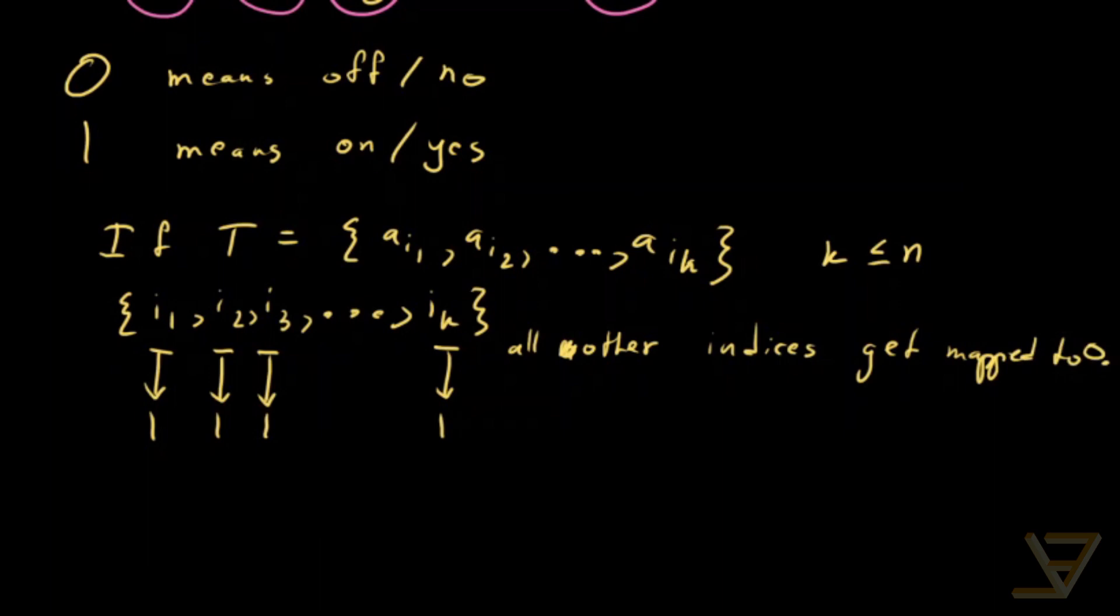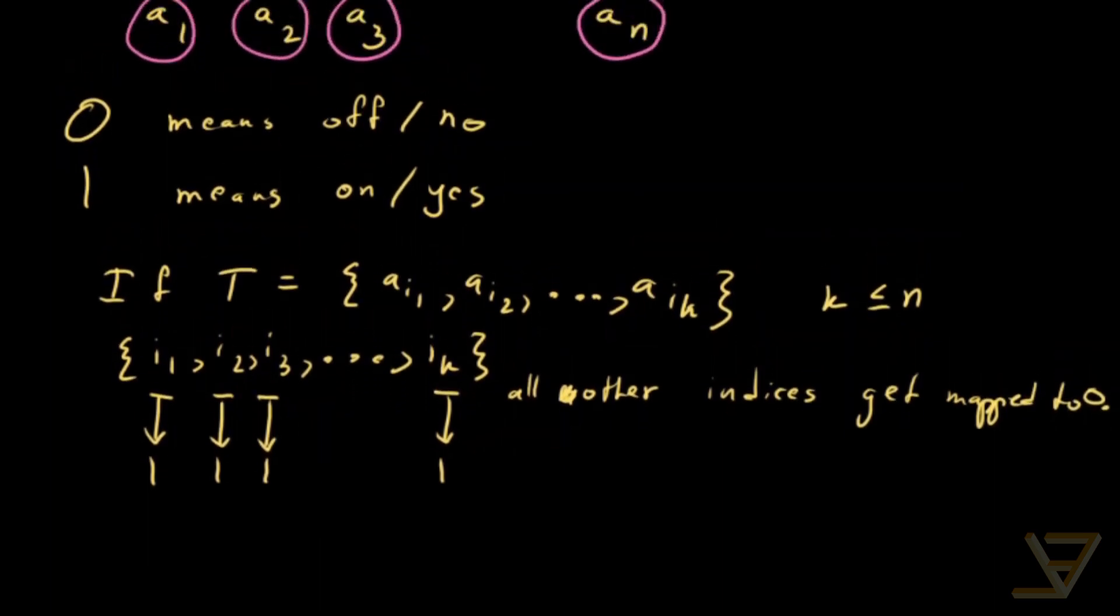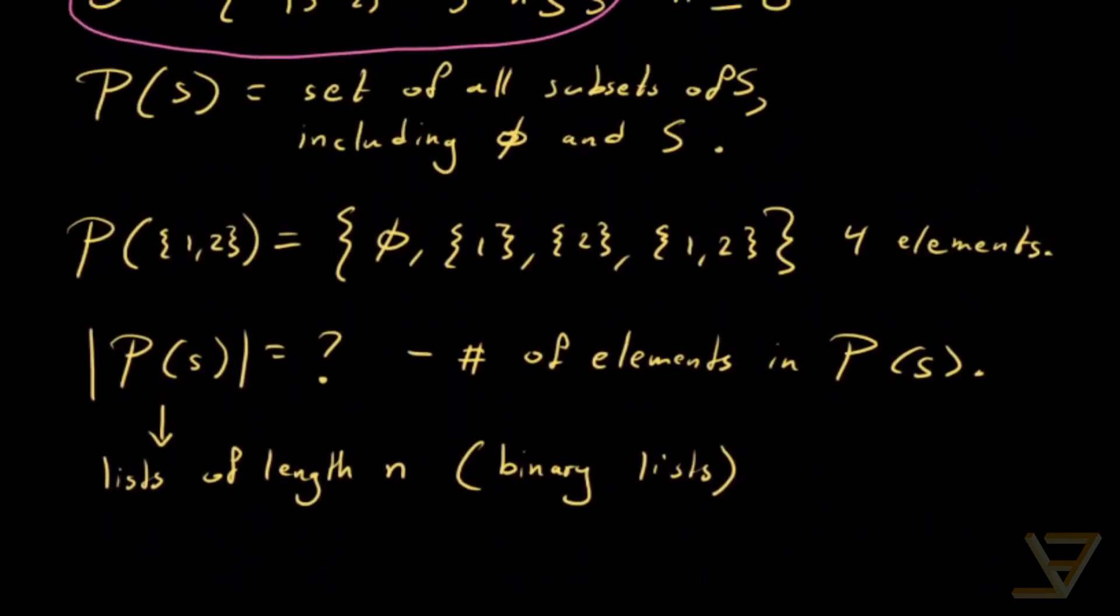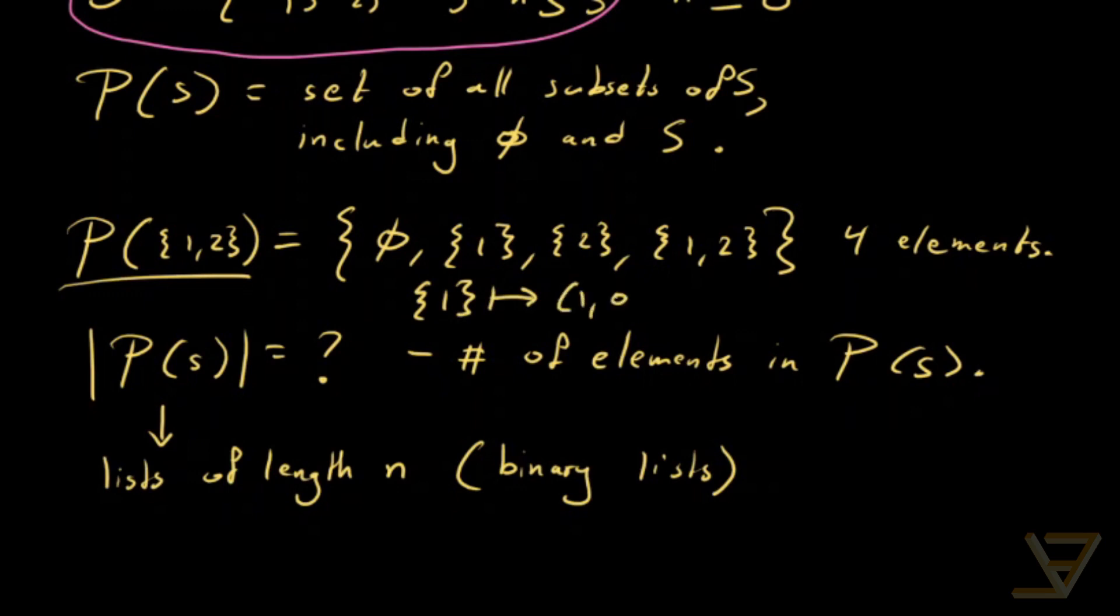So for example, if we go back to our earlier computation of the power set of {1, 2}, we would have lists of 2 elements and the set {1} would get mapped to 1, 0 because 1 is in there but 2 is not.